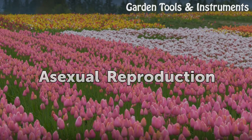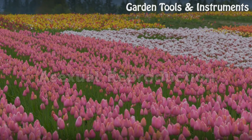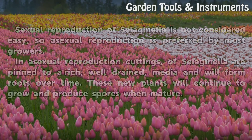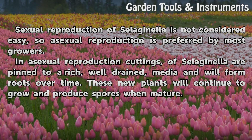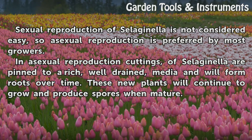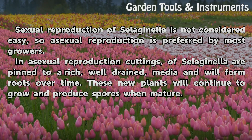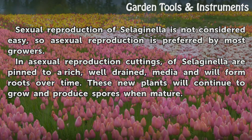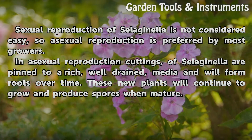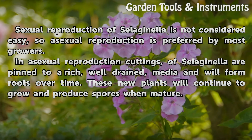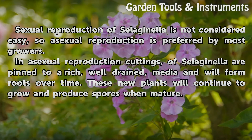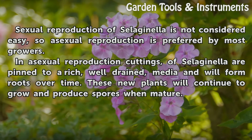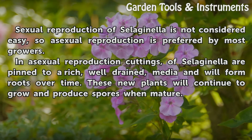Asexual Reproduction. Sexual reproduction of Selaginella is not considered easy, so asexual reproduction is preferred by most growers. In asexual reproduction, cuttings of Selaginella are pinned to a rich, well-drained media and will form roots over time. These new plants will continue to grow and produce spores when mature.